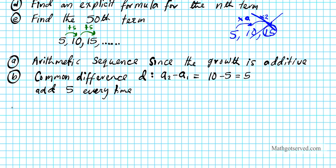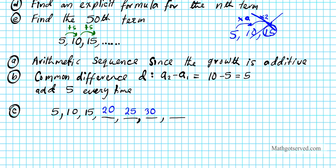Now let's find the next four terms. We have 5, 10, 15 — we need four more. Since the pattern is to add 5 every time: 15 plus 5 is 20, 20 plus 5 is 25, 25 plus 5 is 30, and 30 plus 5 is 35. So the next four terms are 20, 25, 30, 35.